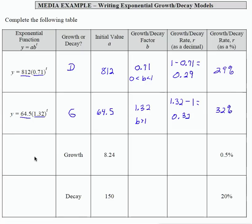Looking at the third row, I'm given some information that I can use to write an equation. I know it's a growth equation, which means my b value is going to be bigger than 1. I have an initial value of 8.24. So I can start my equation as 8.24 and then times something that's going to be my value for b.